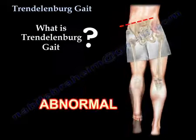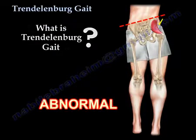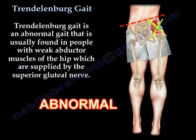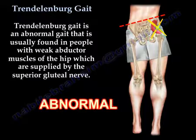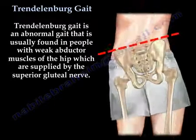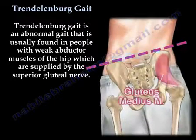What is Trendelenburg Gait? Trendelenburg Gait is an abnormal gait that is usually found in people with weak abductor muscles of the hip, which are supplied by the superior gluteal nerve.